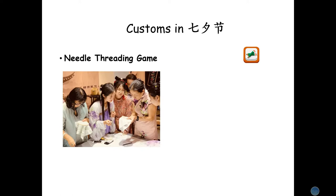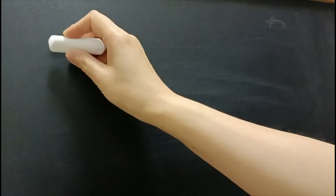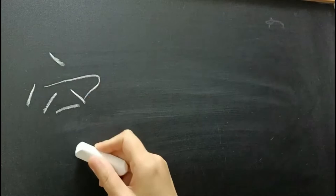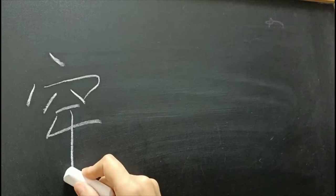Next, the custom I want to introduce in Qi Xi Jie is the needle threading game. In Chinese it is chuan zhen qi chiao. Now let's write chuan zhen qi chiao together. First, chuan: a dot, one more dot, horizontal, hook, two dots, horizontal, a turn, cross, hook, and slide down.